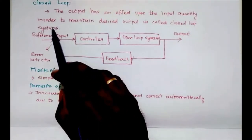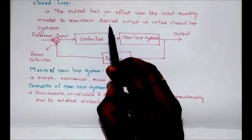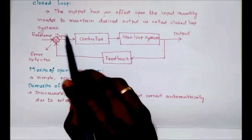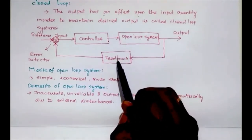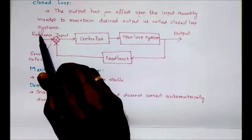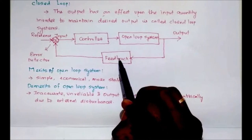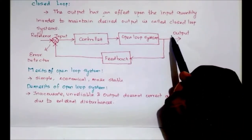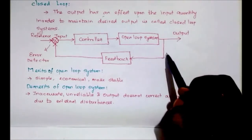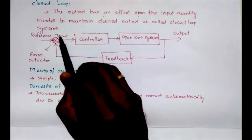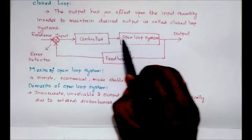A closed loop system is a system where the output has an effect upon the input quantity in order to maintain the desired output. This is the block diagram of a closed loop system. If there is a feedback added to an open loop system, that is called a closed loop system. This is the reference input, then the system consists of an open loop system and a controller, then output, then feedback. If there is a disturbance in the output side, in order to maintain the output in steady state, the disturbance will be sent and compared with the reference, and an error will be generated.